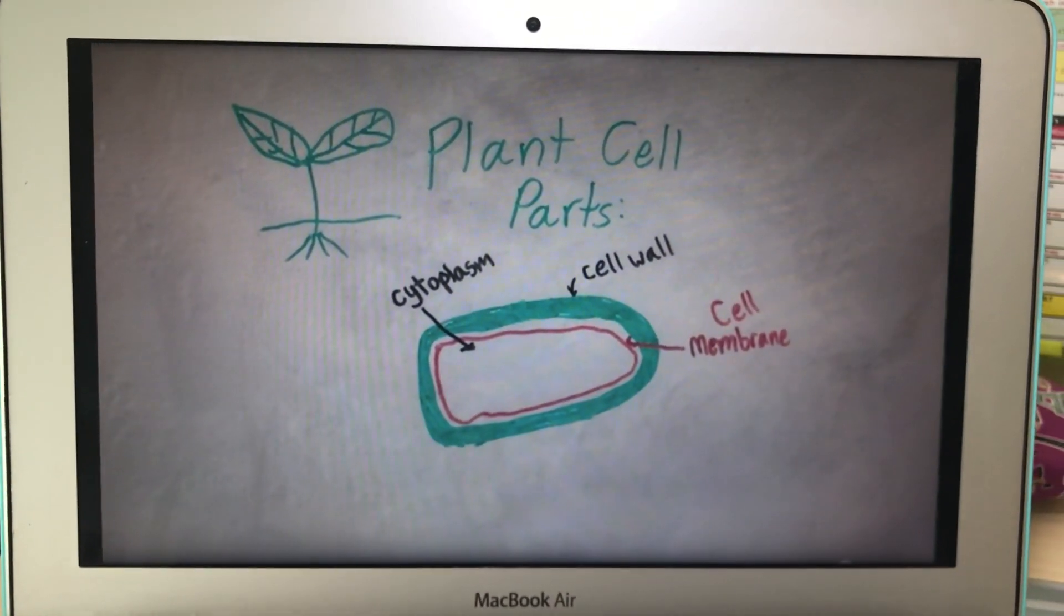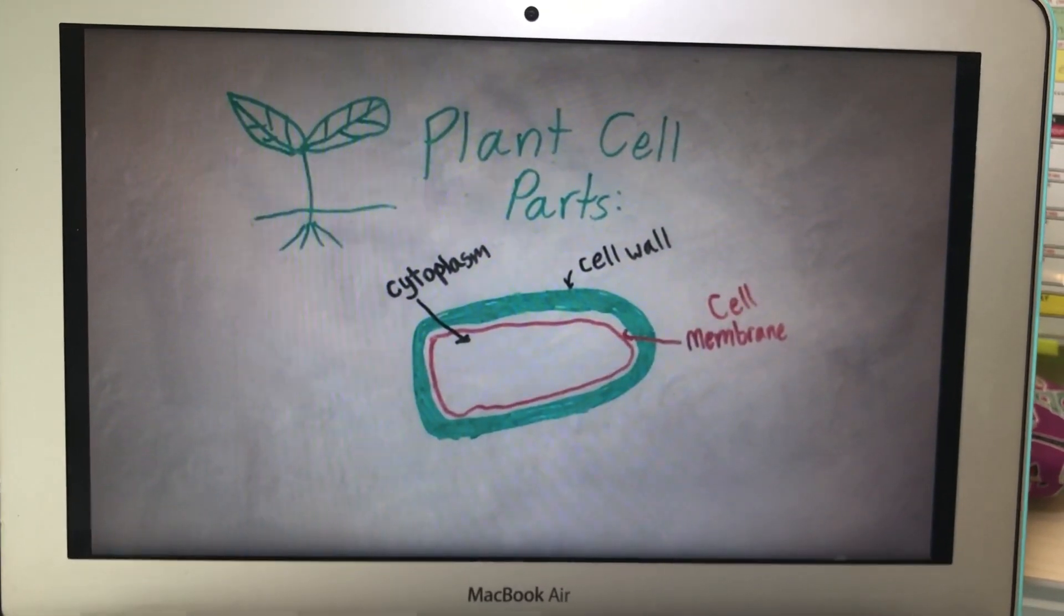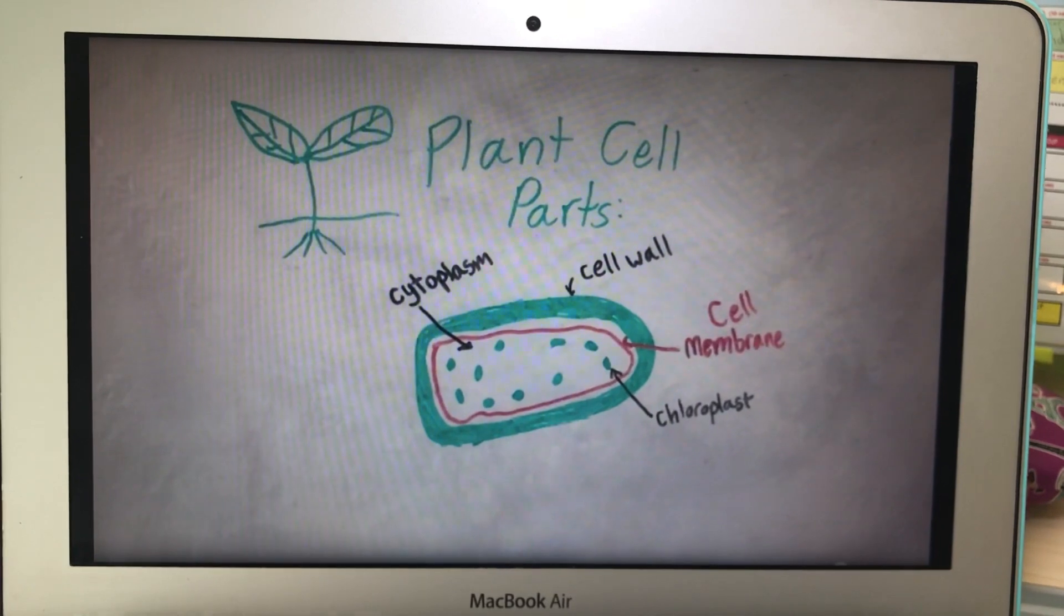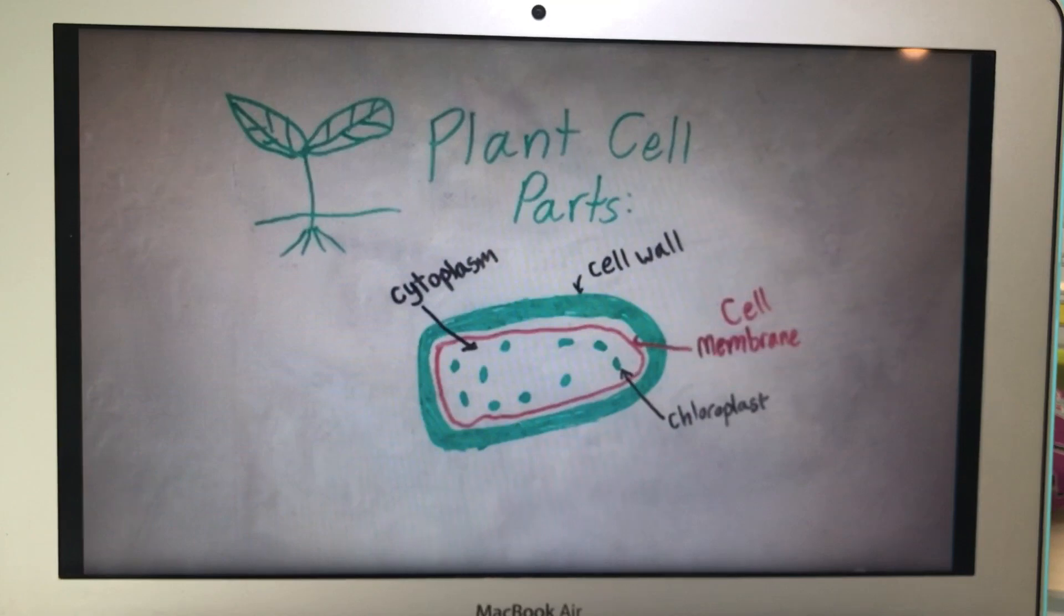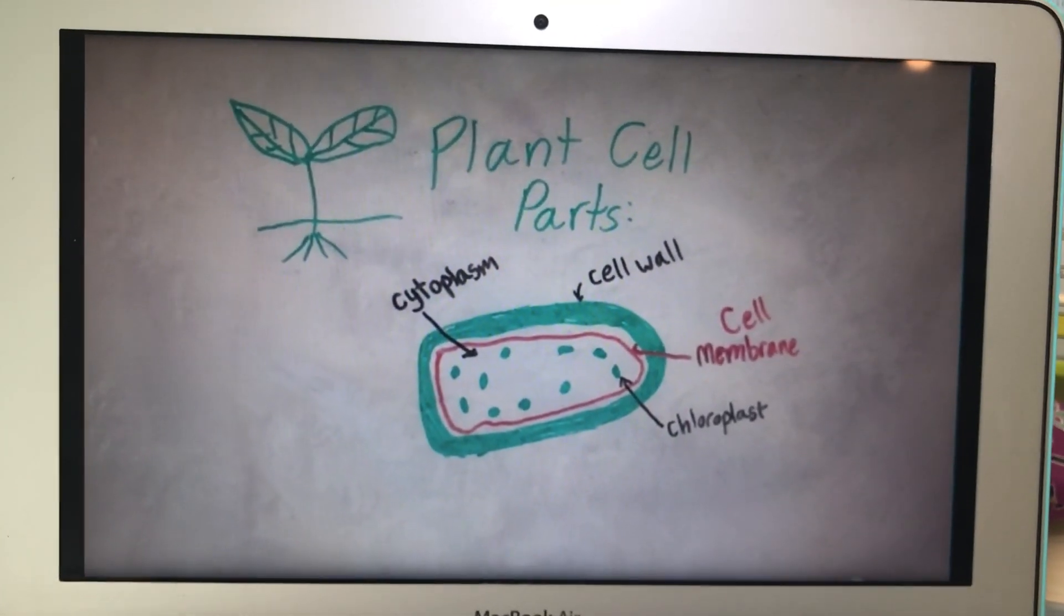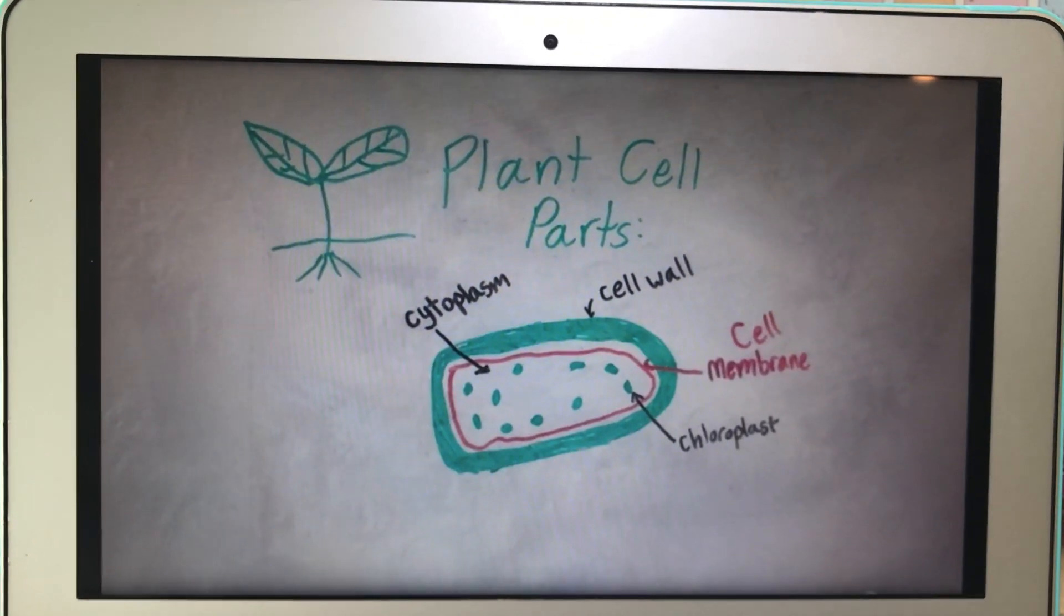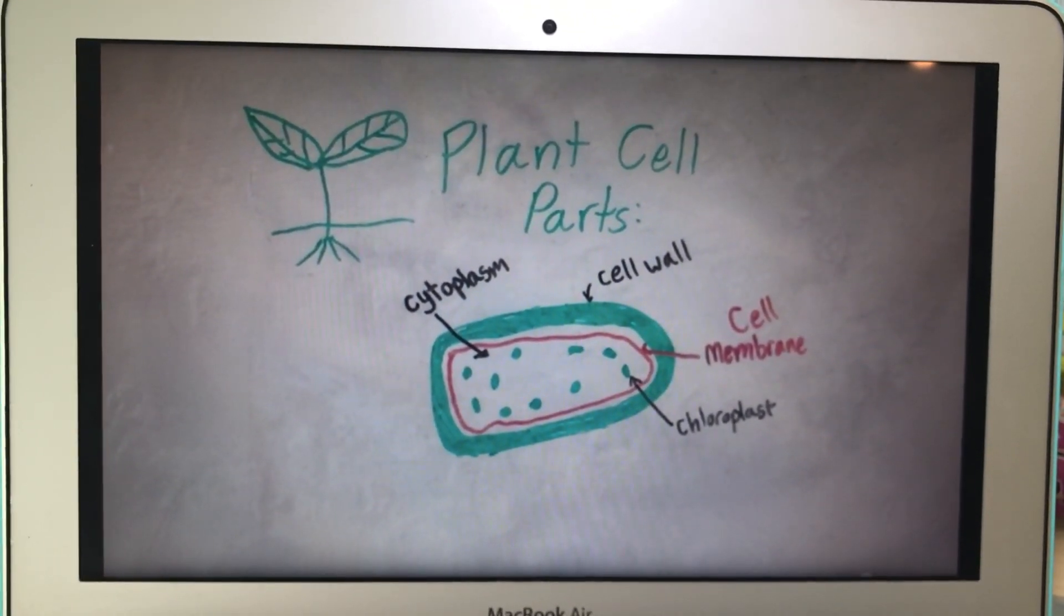Then, there's the cytoplasm. It is a liquid which contains all organelles of a cell. These are chloroplasts. It contains chlorophyll, which keeps the plant green. It absorbs the light energy from the sun and transforms it into glucose for the plant. That's why chloroplasts are known as the photosynthesis organelle.